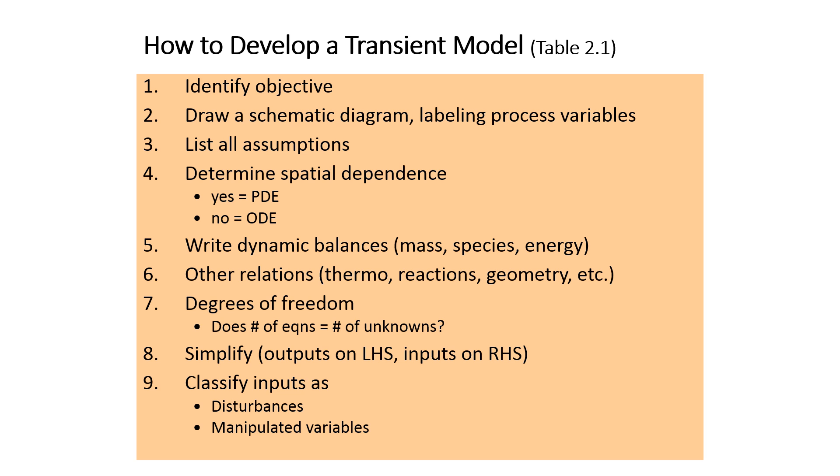To develop a transient model, you want to go through these nine steps. First of all, you want to identify an objective for your modeling. Second, go ahead and draw a schematic diagram. You want to label all the process variables. You also want to list all assumptions. These first three things are often passed over, but they're very critical to the development of these transient models.